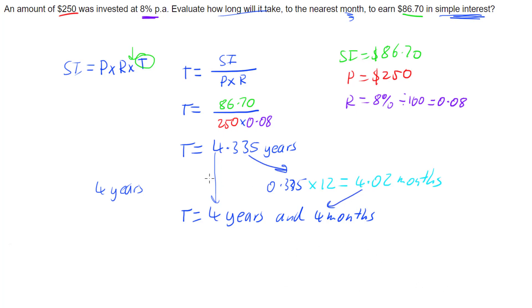So to calculate the time of an investment using simple interest, divide simple interest by your principal times your rate, then convert the decimal years into years and months — or just months if that's what's asked. That's it, thank you.